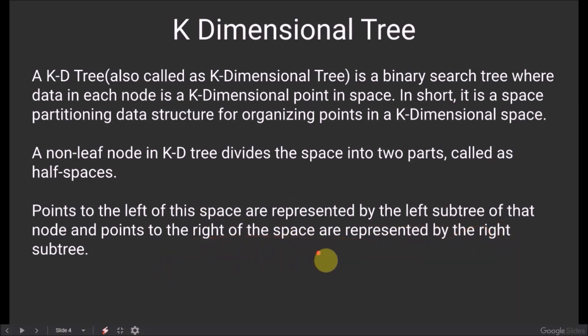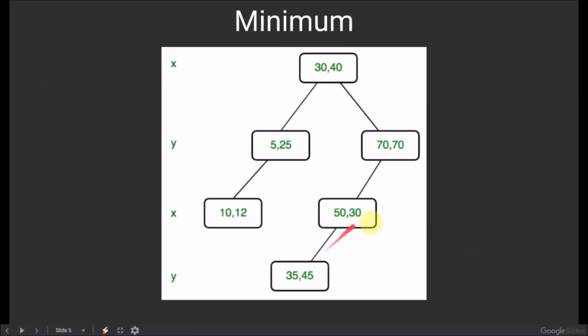Now let us look at what we mean by the minimum of a k-dimensional tree. Suppose we have this k-dimensional tree, here the value of k is 2. So for x-axis, the minimum value is 5. Therefore, when the value of dimension is x, the minimum node will be 5,25.